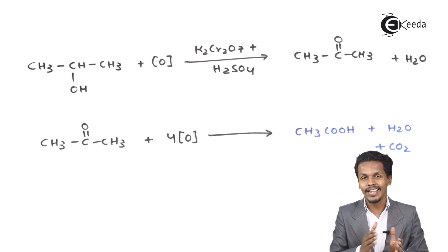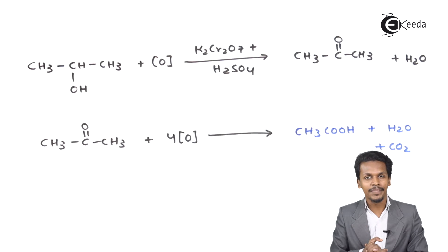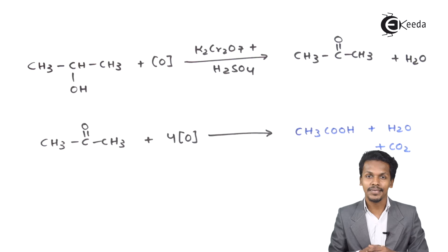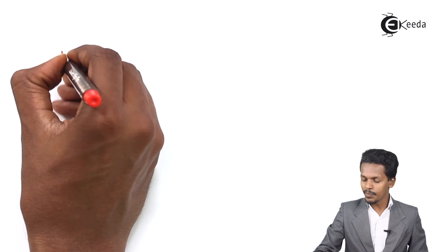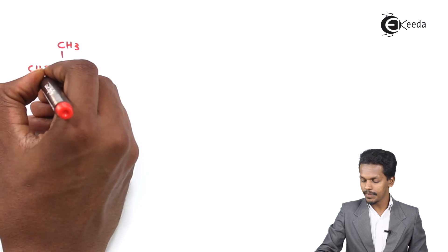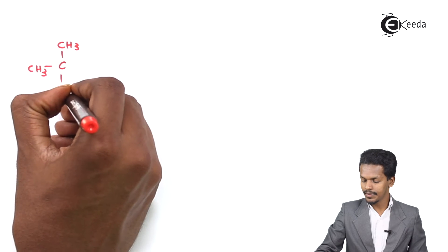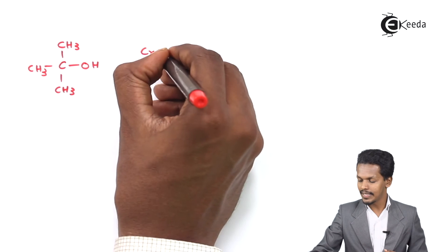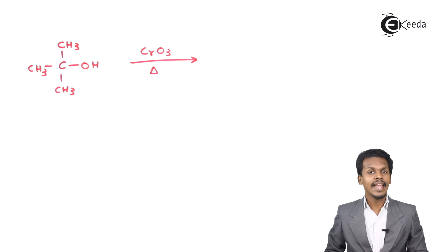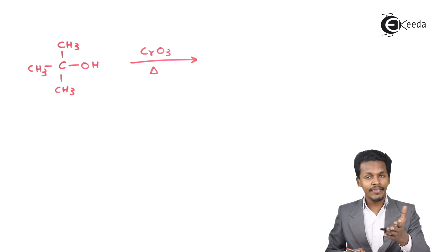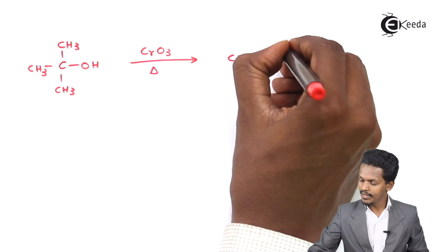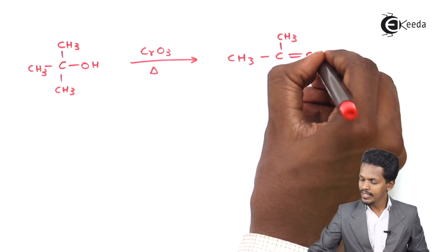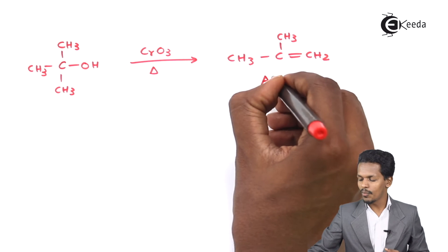Now let us talk about what happens when tertiary alcohol undergoes oxidation. Consider tertiary butyl alcohol. In the presence of a strong oxidizing agent CrO3 at higher temperature, the product formed is an alkene: CH3C(=CH2)CH3. But this is not the final product.